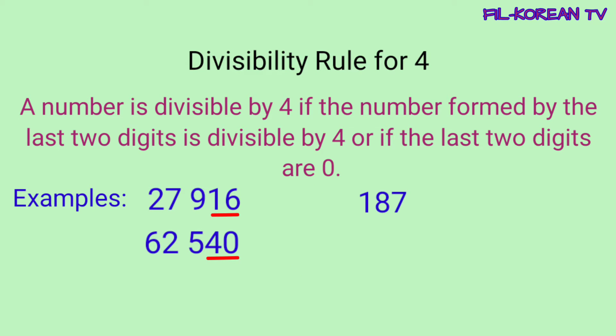Next examples: 187,500 and 3,268,100. Ang mga number na ito ay nagtatapos sa dalawang 0. Dahil nagtatapos sila sa dalawang 0, automatic divisible sila ng 4. Ang titignan lang ninyo yung dalawang numero sa hulihan. Kapag ang number na nabuo ay multiple ng 4 o nagtatapos sa dalawang 0, yung given number ay divisible by 4.